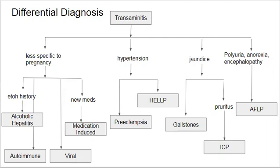The other thing to think about with a transaminitis is that if there's hypertension, our minds go to preeclampsia or HELLP syndrome. Jaundice is fairly nonspecific — when a patient has ICP or gallstones, they will present with jaundice if it's severe. However, jaundice can also present in acute fatty liver and other hepatic conditions. ICP patients will typically present with pruritus, which is a bit more specific for ICP. For acute fatty liver, the more specific symptoms are polyuria, anorexia, and encephalopathy, which are not nearly as common with the other liver pathologies in pregnancy.